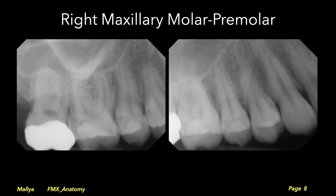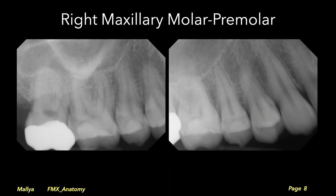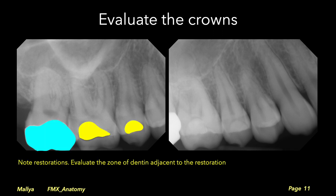Now let's start with the radiographs of the right posterior maxilla. The first step is identification of the teeth, accounting for any unerupted or missing teeth. Evaluate the crowns — you should see an intact cap of enamel which is more radiopaque than the underlying dentin, and the dentino-enamel junction should be a sharp interface. The radio density of the dentin should be homogenous. Evaluate the restorations and the zone of dentin adjacent to them. Metallic restorations appear much more radiopaque than composite restorations. This is important to detect recurrent caries. Also consider that radiolucency under a restoration may be due to a liner and not recurrent caries.